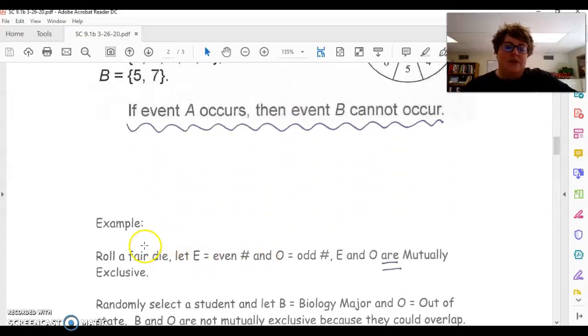So a couple of examples. Roll a fair dice. Let event E be an even number and event O be an odd number. So E and O are mutually exclusive. And the reason for that is when I roll a dice, I'm either going to get an even number or an odd number. I'm not going to get both. I'm only going to get one option.